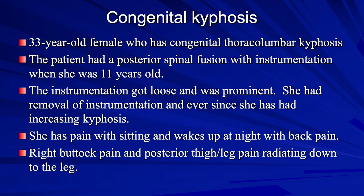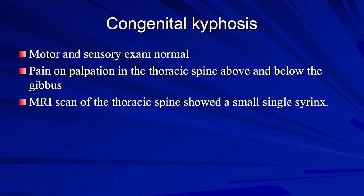This patient has congenital thoracolumbar kyphosis. She is 33 years of age and had a previous posterior spinal fusion with instrumentation when she was 11 years old. The instrumentation was loose and prominent. She had subsequent removal of the instrumentation, and ever since she has had increasing kyphosis. Her motor and sensory examination is normal.